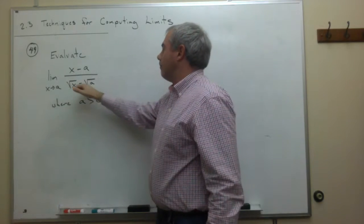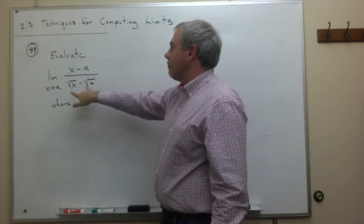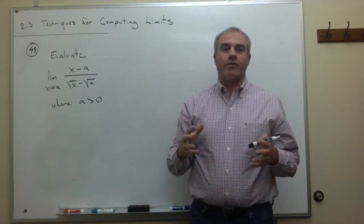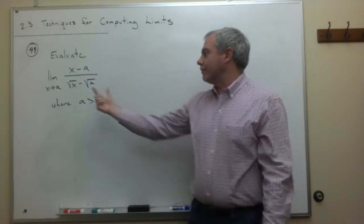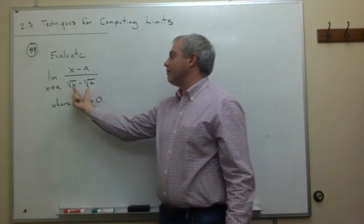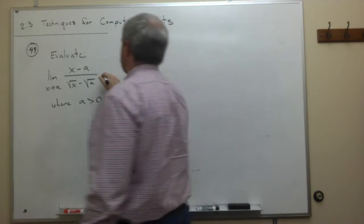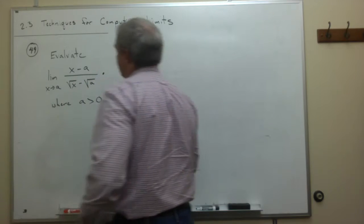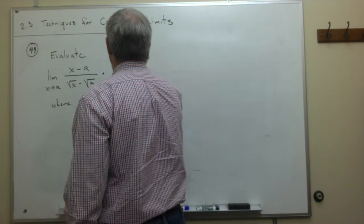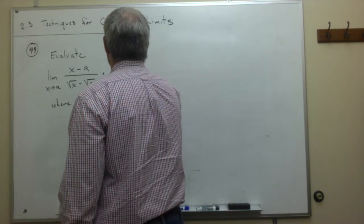We want to multiply the top and the bottom of this fraction by the conjugate of the bottom. Now, the bottom is where I have the square roots, and I'm wanting to get rid of these square roots and have something I can work with on the bottom. So I'm going to multiply the bottom and the top of this thing by the conjugate of the bottom. So let's go ahead and do that. The conjugate of the bottom is the square root of x plus square root of a divided by square root of x plus the square root of a.